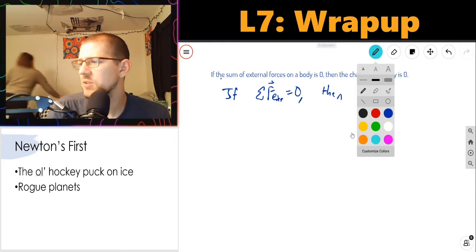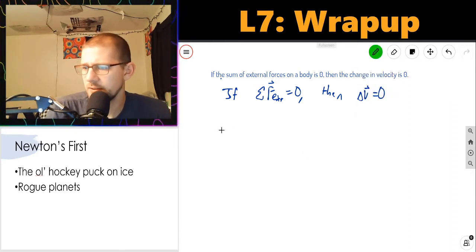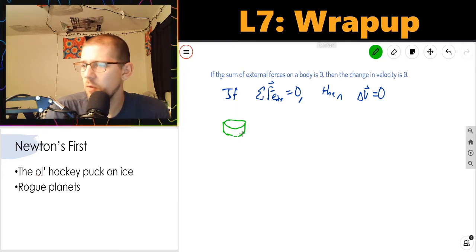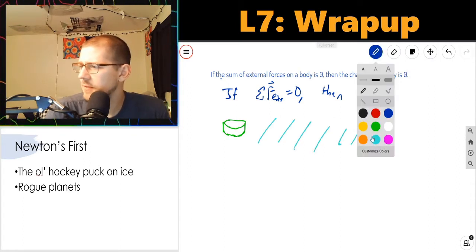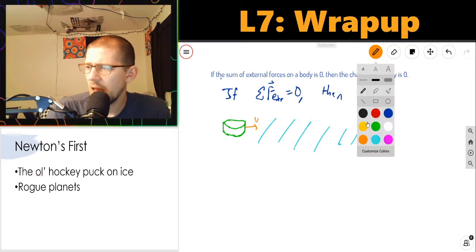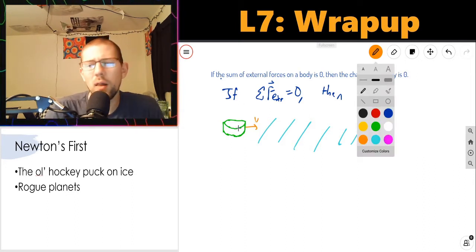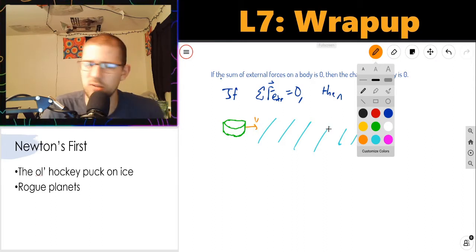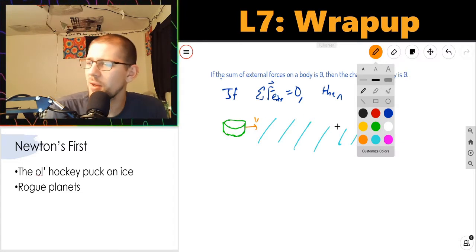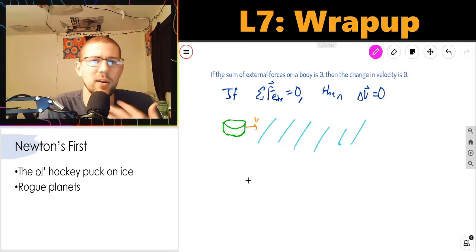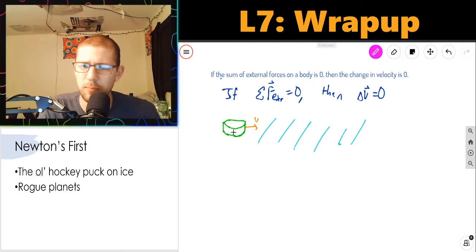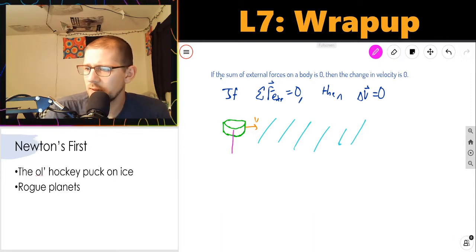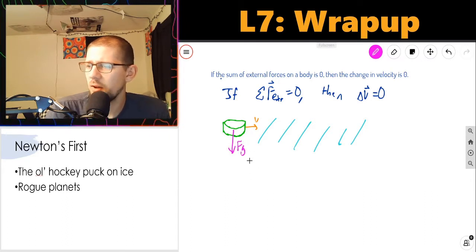So the way that I write this as an equation is if the sum of external forces, the vector sum, is zero, then delta V equals zero. An object in motion stays in motion at constant velocity unless acted upon by a net external force. So there are two examples which come to mind for me when I'm thinking about Newton's first law. The first is of a hockey puck. This is the pretty classic example of a hockey puck moving along on frictionless ice.